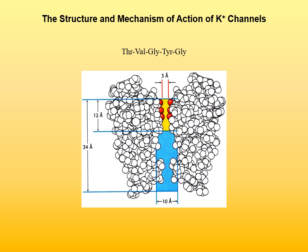As potassium cations pass one by one through the narrow yellow-indicated pore of the channel, they electrostatically repel each other because they are positively charged, and so they push each other through the channel.